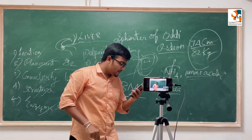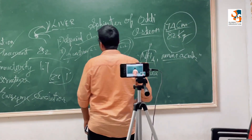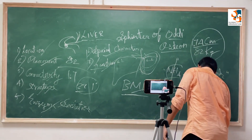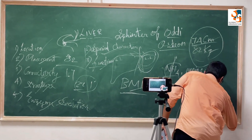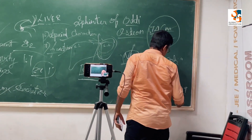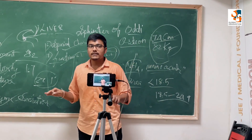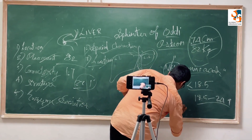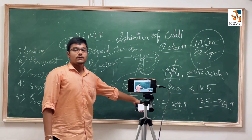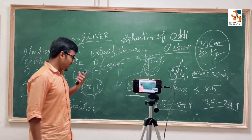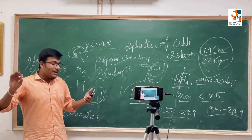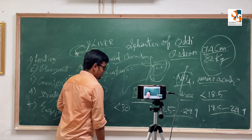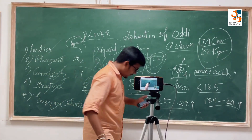Now let's look at the BMI categories. If your BMI is below 18.5, you are in the underweight category. If your BMI is 18.5 to 24.9, you are in the normal weight category. If your BMI is 25 to 29.9, you are in the overweight category — I am in this category. And if your BMI is greater than 30, you fall into the obesity category.